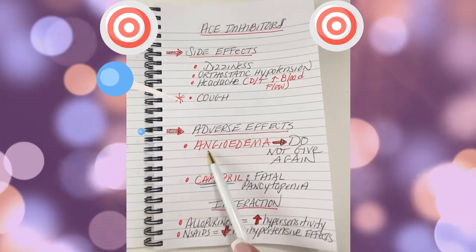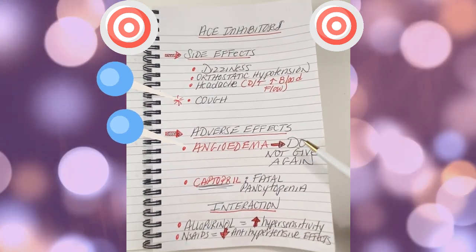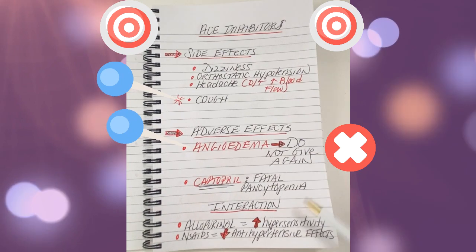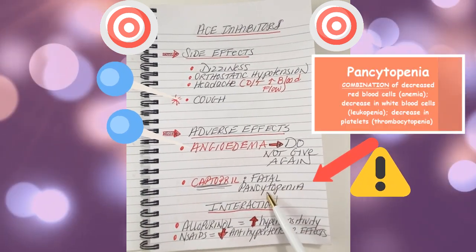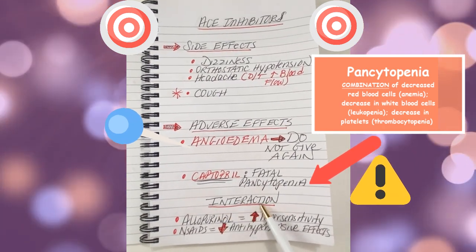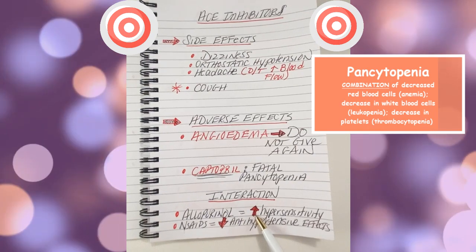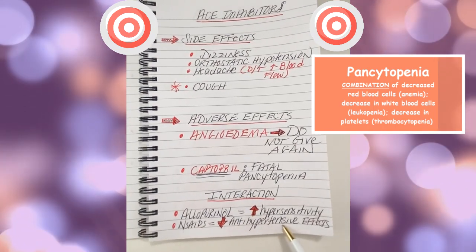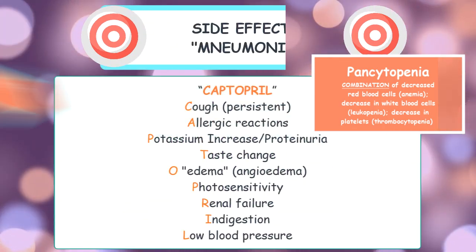Some adverse effects that you have to monitor is angioedema. If the person develops any type of swelling, usually in the facial area or in the neck, do not give it again — this is considered an allergic reaction. Also, Captopril causes fatal pancytopenia. ACE inhibitors also interact with allopurinol, as it increases hypersensitivity to the medication, and NSAIDs decrease the ability of ACE inhibitors to decrease blood pressure.